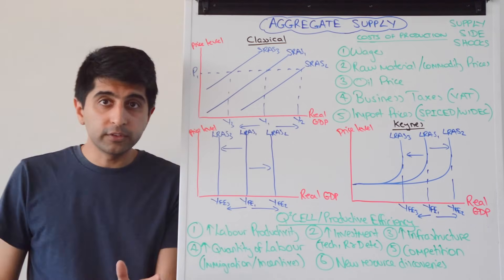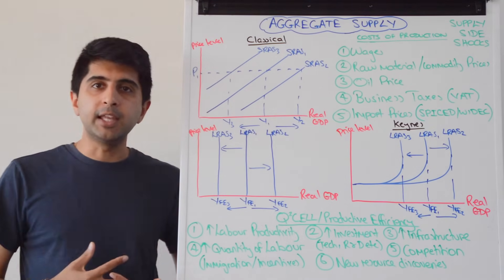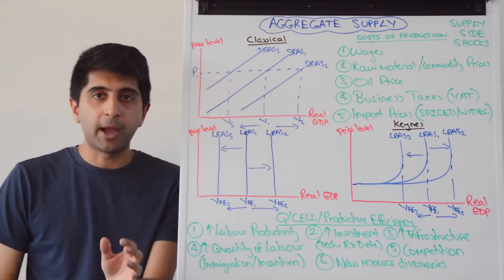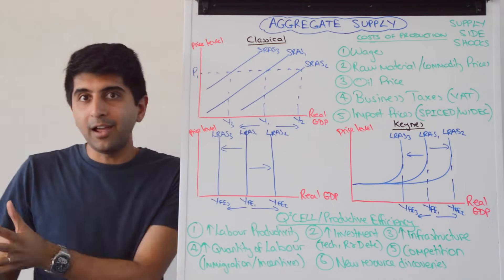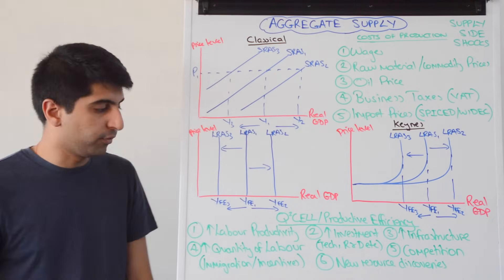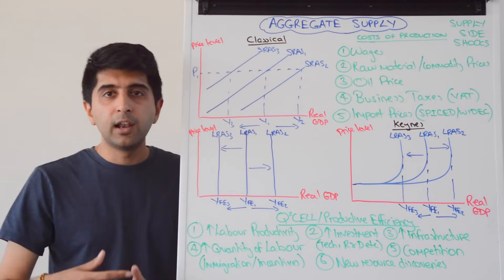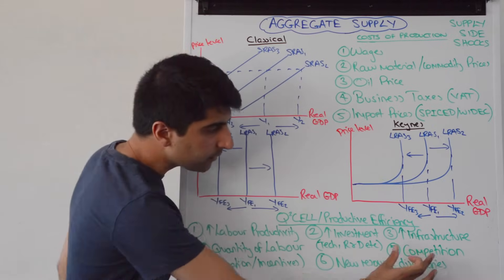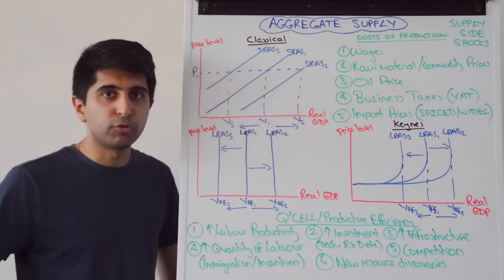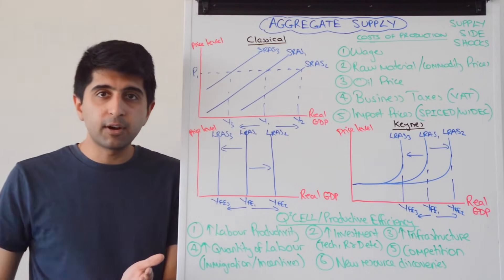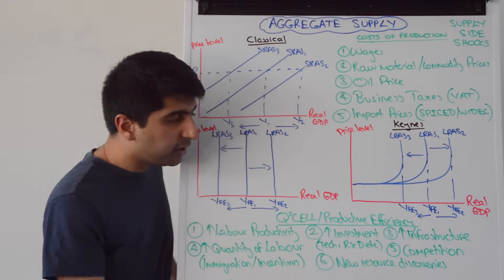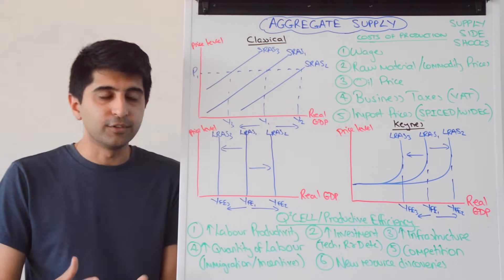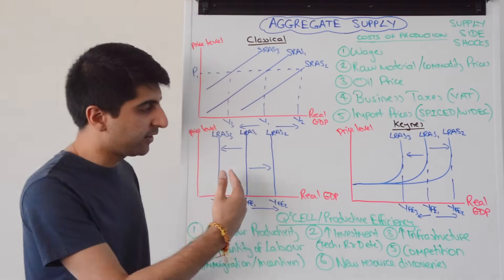We can also look at increases in the quantity of labour — for example, immigration. Migrants coming into the country of working age will increase the size of the labour force. When we say quantity of labour, it's the size of the labour force, not just the unemployed becoming employed. Incentives like reducing benefits or cutting income tax can make the inactive become active, increasing the quantity of labour. Competition is also massive for productive efficiency improvement — privatisation, deregulation, trade liberalisation, or competition policy generally. If competition improves, firms will look to reduce costs to stay competitive, increasing productive efficiency and shifting LRAS to the right.